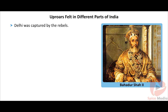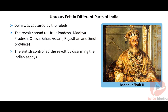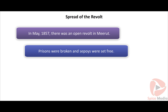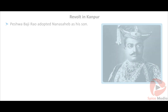The revolt spread like wildfire to many parts of India. Delhi was captured by the rebels. Bahadur Shah II, the Mughal heir, was proclaimed Emperor of India and was residing at the Red Fort. The revolt spread to Uttar Pradesh, Madhya Pradesh, Orissa, Bihar, Assam, Rajasthan, and Sindh. There was chaos and panic everywhere. The revolt was initially confined to army barracks, and the British controlled it by disarming the Indian sepoys.